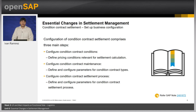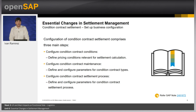The configuration of Conditioned Contract Settlement comprises three main steps. First, configure Conditioned Contract Conditions. In this step, you define pricing conditions that are relevant for the calculation of the settlement amount during the Conditioned Contract Settlement. In addition, you must define other pricing conditions for the correct Conditioned Contract Settlement.